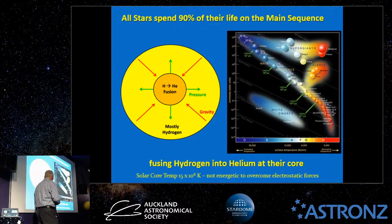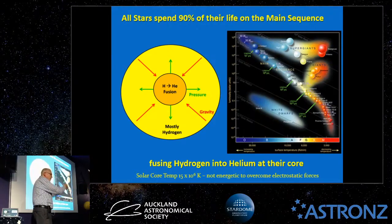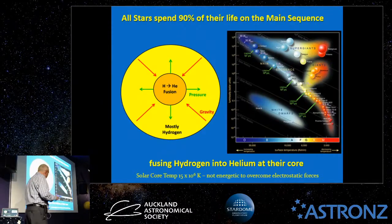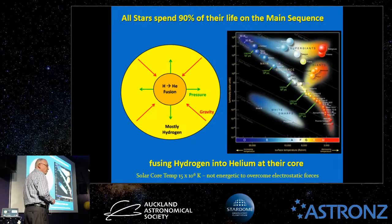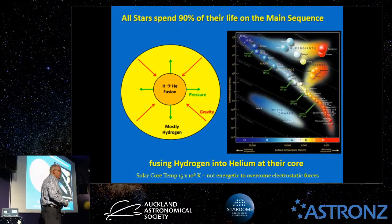The core temperature of our sun is about 15 million degrees. To fuse hydrogen you need to get two positively-charged protons close enough together for the strong nuclear force to take over, but electrostatic repulsion pushes them apart like magnets. Even at 15 million degrees, protons aren't moving fast enough to overcome that electrostatic barrier — and yet fusion clearly does happen. So what explains it?